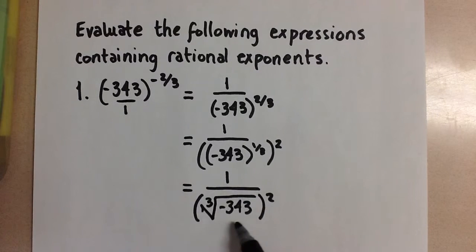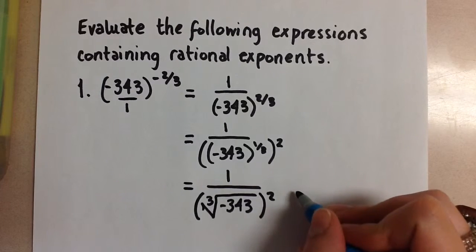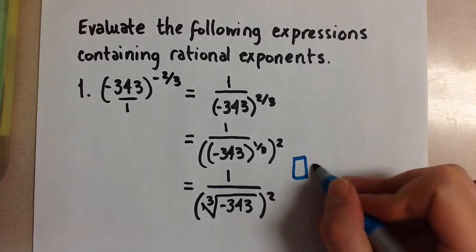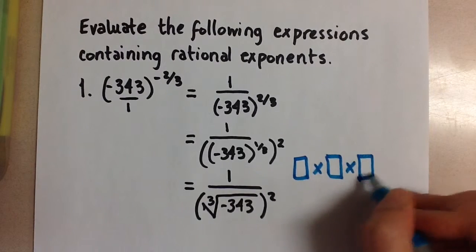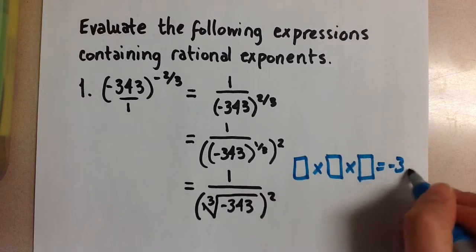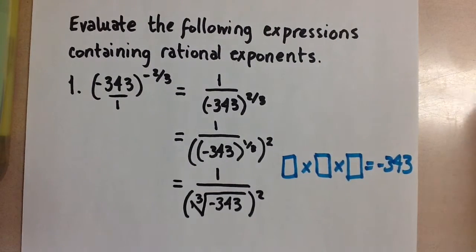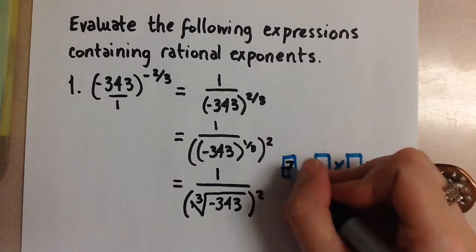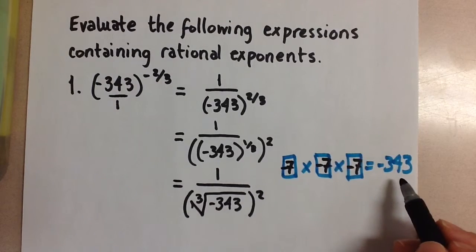To evaluate this, we have to ask ourselves: what number times itself 3 times will give you negative 343? The answer is negative 7. The number negative 7 times itself 3 times will give you negative 343.